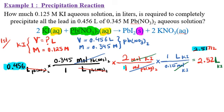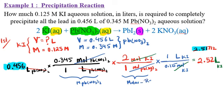Let me do a quick review of this method. I started with volume, not molarity, because molarity is a conversion factor. Multiplying the two numbers for one substance gives moles of Pb(NO₃)₂. Those moles are converted to moles of KI using the molar ratio — always the second conversion factor. Then moles of KI are converted to volume by applying the molarity of KI.